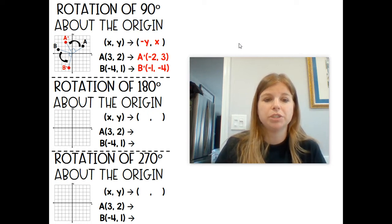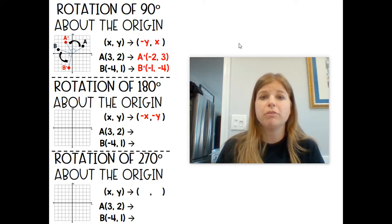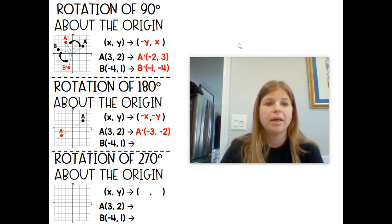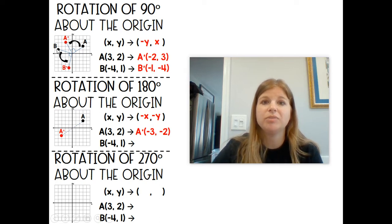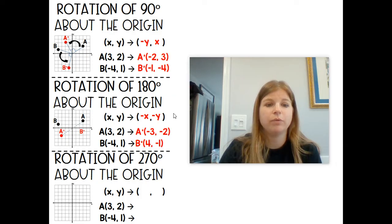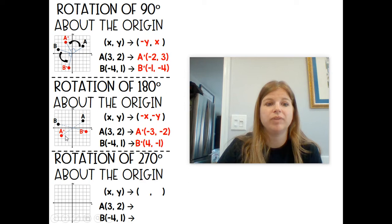Rotation of 180 degrees about the origin: a rotation of 180 is (-x, -y). If you've learned about reflections, a rotation of 180 degrees is exactly the same as reflecting over the origin — negative x, negative y. So if A is at (3, 2), then A prime is at (-3, -2). A 90-degree rotation of point A sent it from the first quadrant to the second quadrant. B went from the second quadrant to the third. At 180 degrees — two 90-degree rotations combined — point B at (-4, 1) gives B prime at (4, -1), which started in the second quadrant and moved to the fourth.